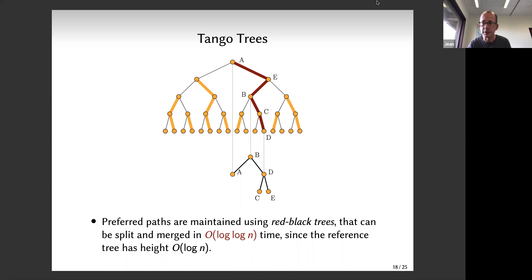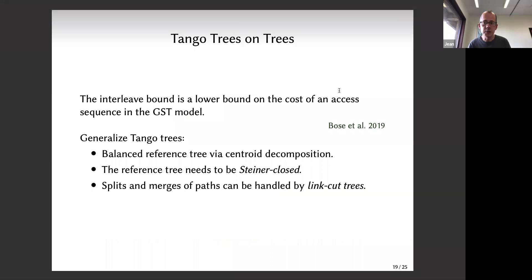We want to do the same for search trees on trees. First, we prove the same interleave lower bound holds - any online search tree on trees cannot do better than this interleave bound. This carries through almost verbatim from the original proof. We have the lower bound; now we want to match it as tango trees do. So we want to do 'tango trees on trees.' We have balanced search trees - using centroid decomposition gives height log n.